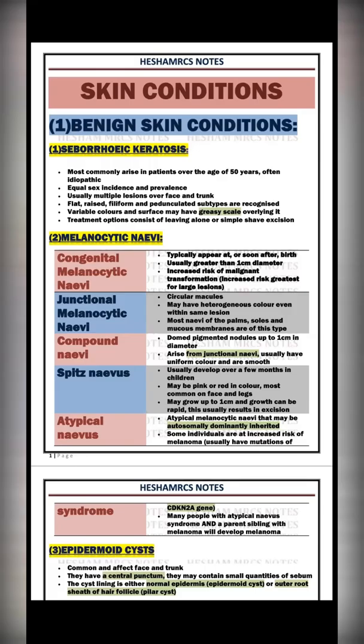The second condition is melanocytic nevi. Nevus is the most common skin lesion. We have four subtypes. The first is congenital melanocytic nevus, which is congenital and can appear immediately at birth or at birth. It usually increases in size until it reaches one centimeter in diameter, and unfortunately it has malignant transformation susceptibility.